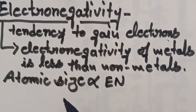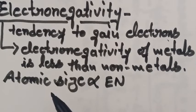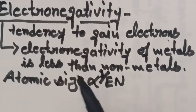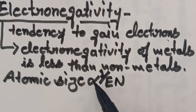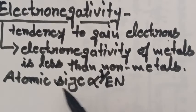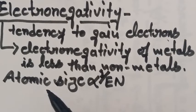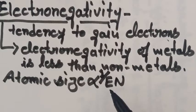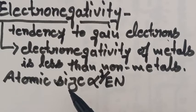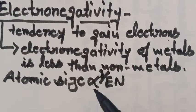The next thing is factors which influence electronegativity. The first factor is atomic size. Atomic size is inversely proportional to electronegativity — with increasing atomic size, the electronegativity decreases. The reason behind this is that with increase in atomic size, the nuclear pull on the valence electrons decreases, and hence the tendency of the atom to gain electrons decreases.